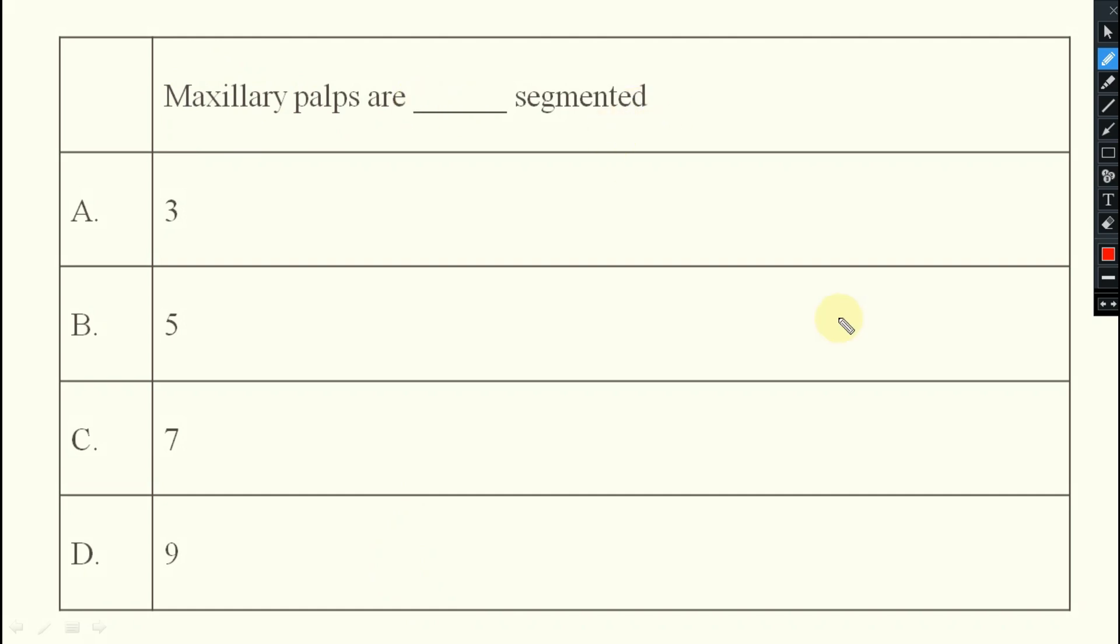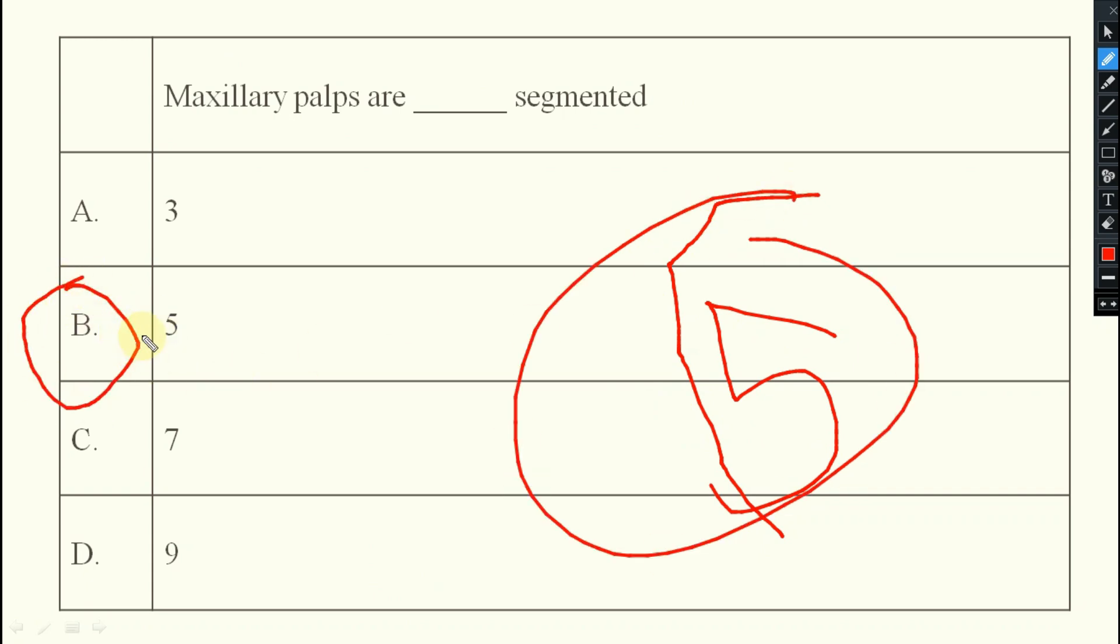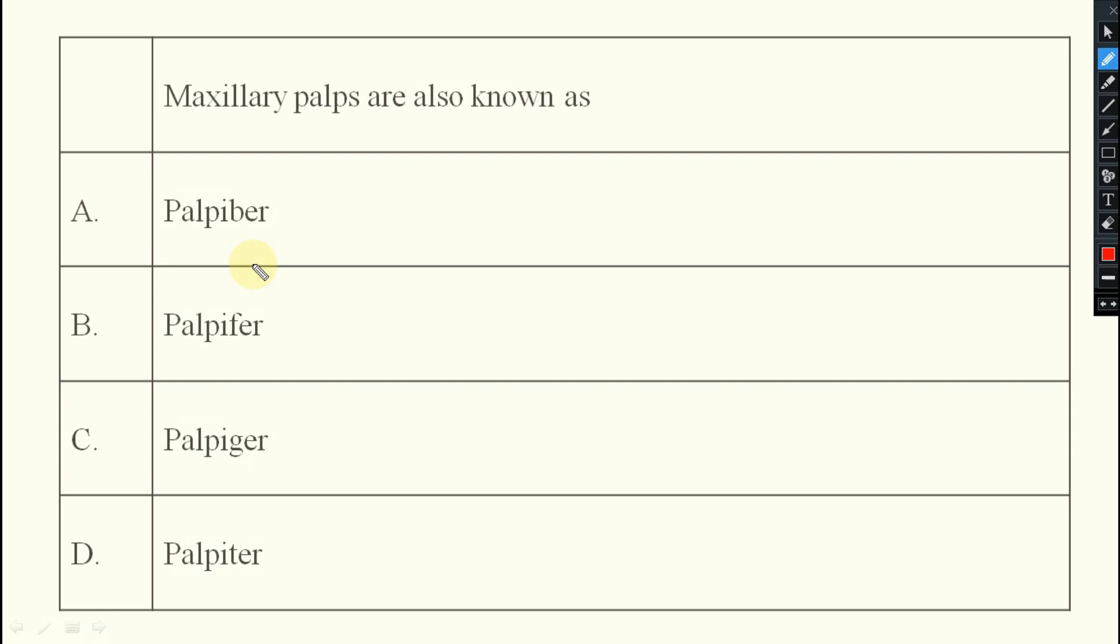Next. Maxillary palps are how many segmented? 1, 2, 3, 4, 5. 5 segmented. So option will be option B is the right answer, 5.